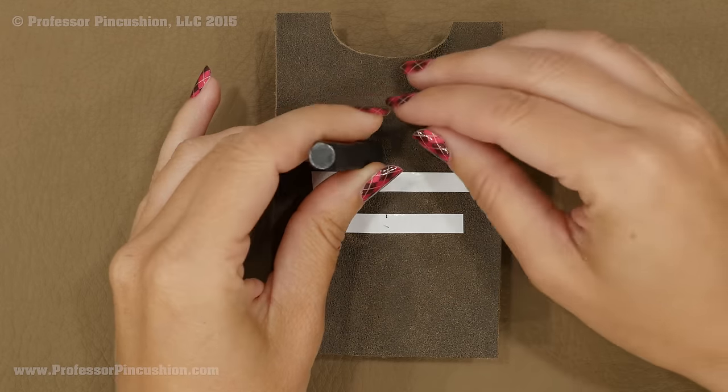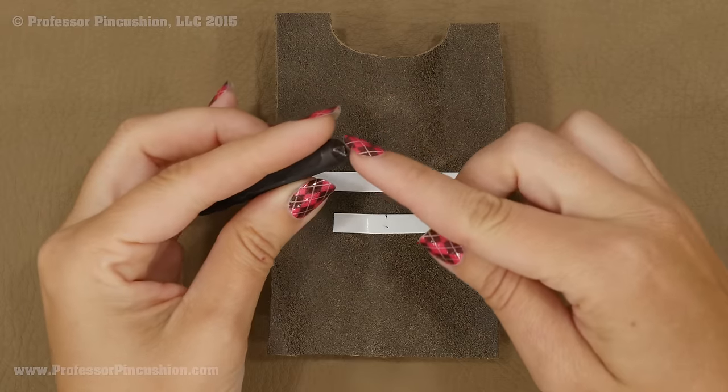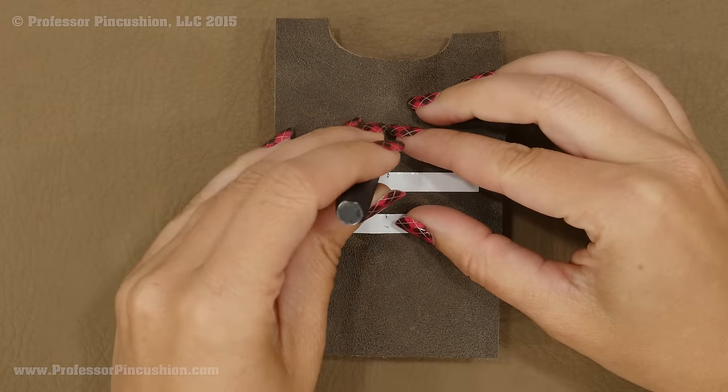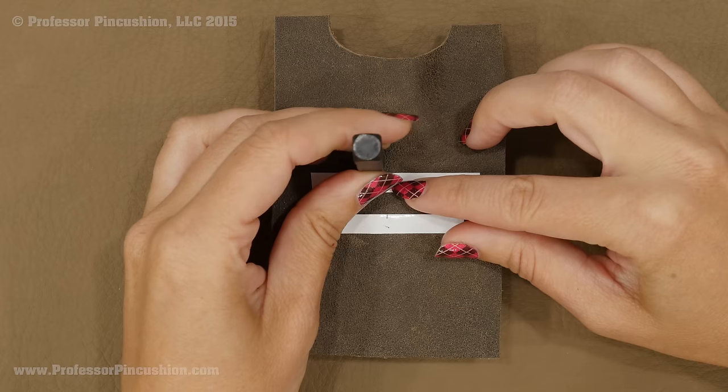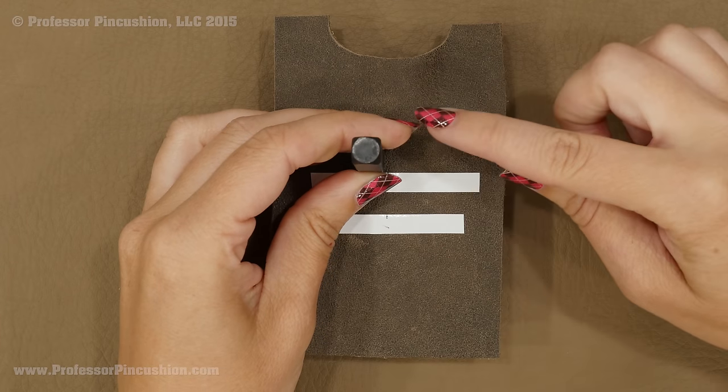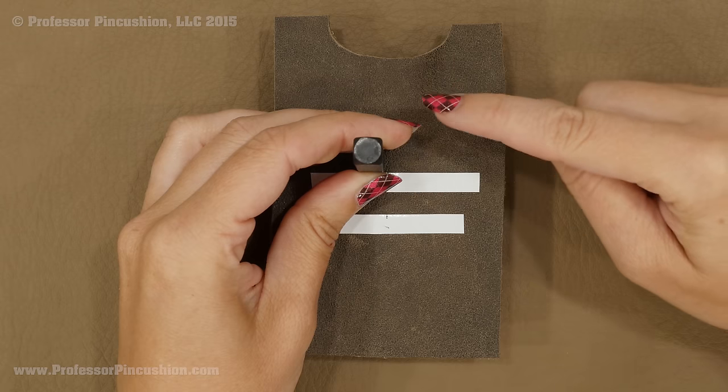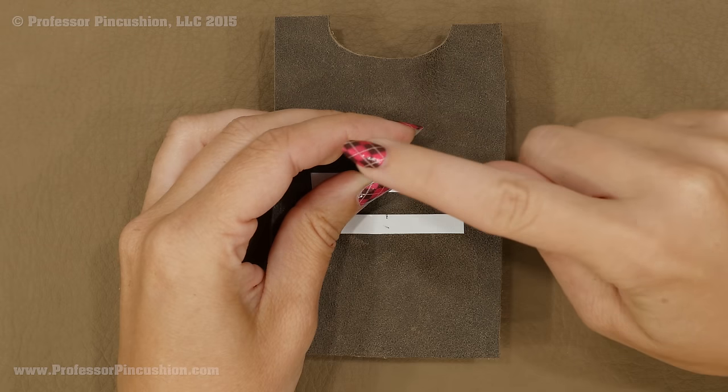So I place it and I kind of find out where my bottom of my letter is, and then I kind of slide it until it feels like it's hitting the bottom of my tape. Then I'm going to take my hammer and do one strong strike right at the base.